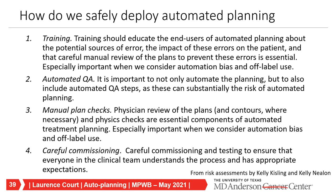What does all this tell us about safely deploying automated tools? There are four main things to consider. First, training: we must educate end users about the tools, what can go wrong, the impact of failures, and risks like automation bias and off-label use. Second, automated QA: automating some QA steps adds another level of safety without replacing manual steps. Third, manual plan checks: physician review of plans and contours, plus physics checks, are essential components of automated treatment planning—that patient with hip implants is an extreme example of why. Fourth, careful commissioning and testing of tools to ensure the clinical team understands the process and has appropriate expectations.